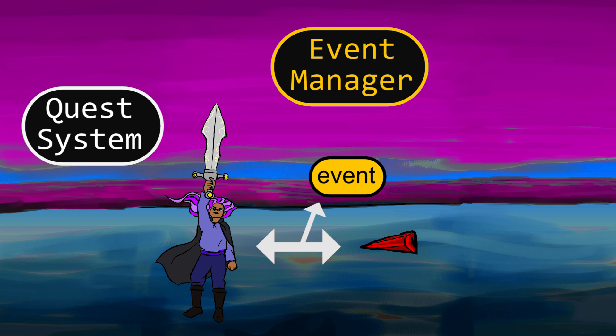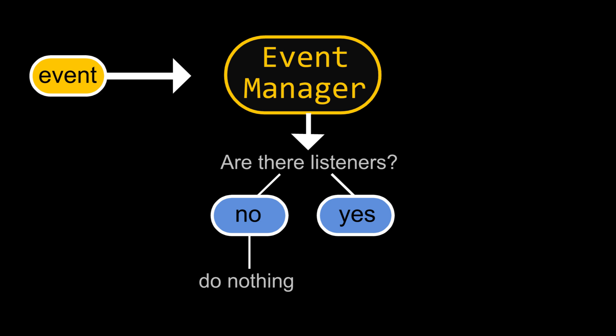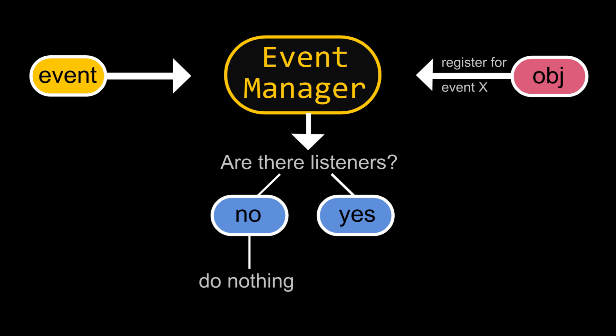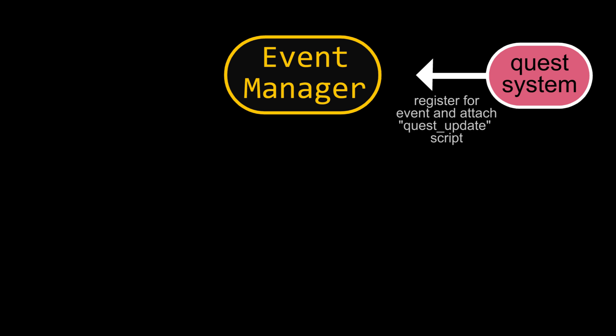There are a couple of ways you could define an event, but something that has to be common is that you want each event to be unique. You could have event types that could contain data about the event, or each event could just have its own unique ID. Regardless, let's have the event fire and then be sent off to the event manager. At this point, the event manager can check if there is anyone listening for that event. It may be that no one is listening, in which case it can be discarded. But if there is a listener, then we can take further action. So to become a listener, any object can register itself with the event manager — kind of like saying 'I want to be notified when a certain event X is performed.' Not only that, but it could also register a certain action or script that it wants executed as soon as that event gets triggered. You could even make these scripts quite general and allow objects to supply arguments to pass into the scripts they register. So our quest system can register itself for the 'destroy red shard with light sword' event and attach an update quest script that it wants executed when that event happens.